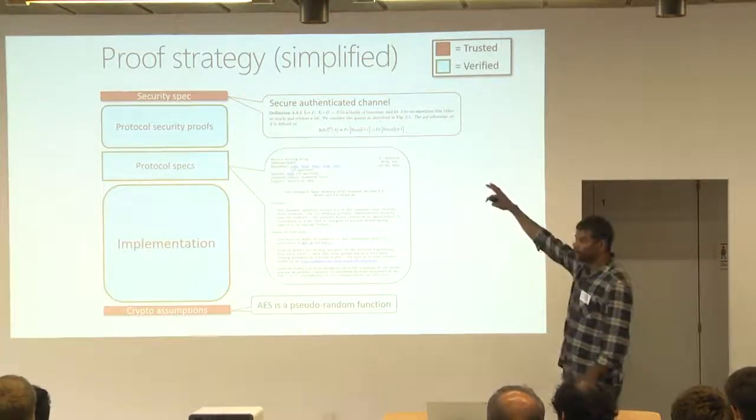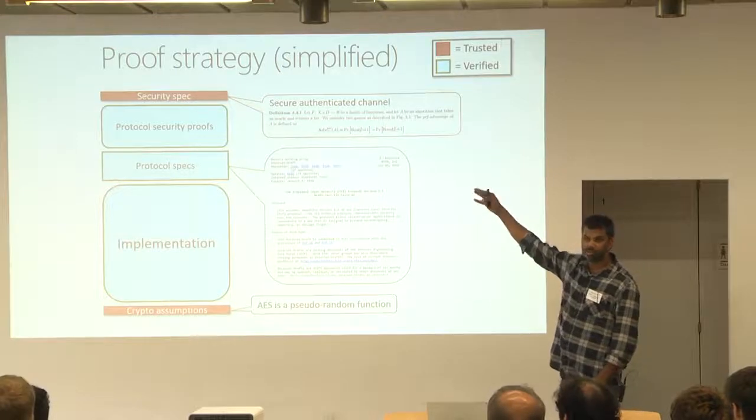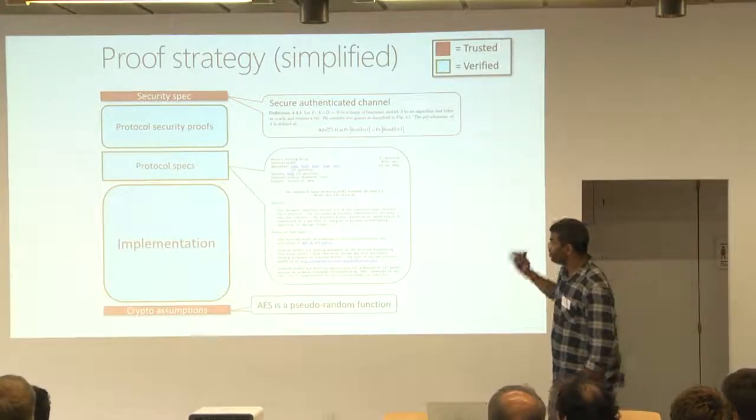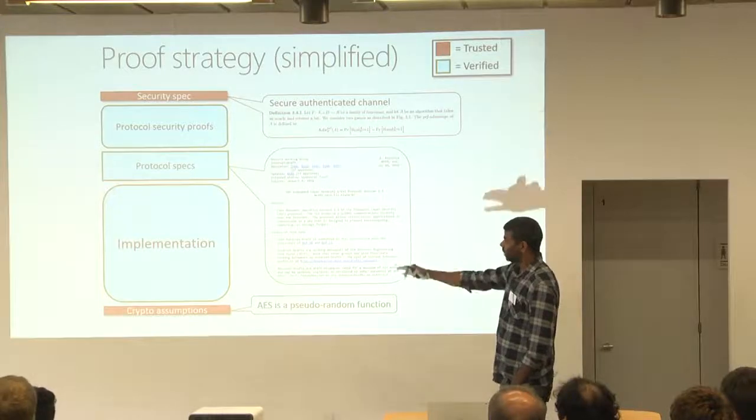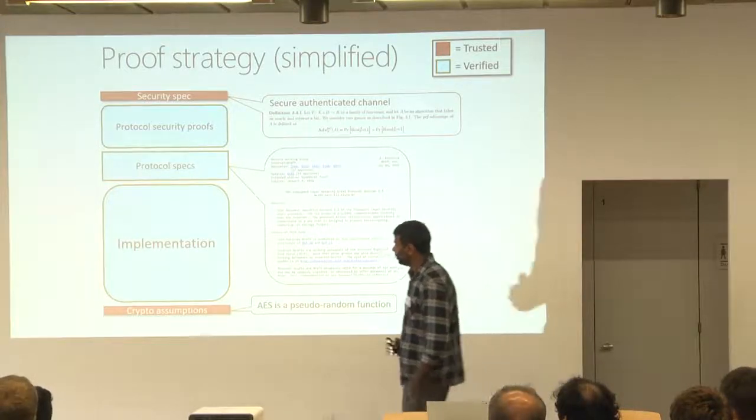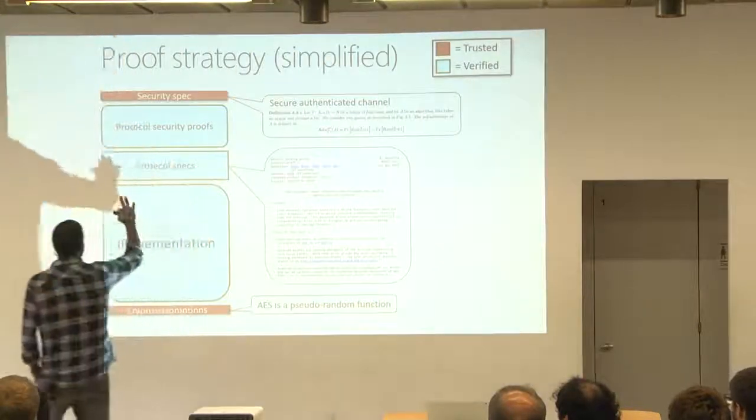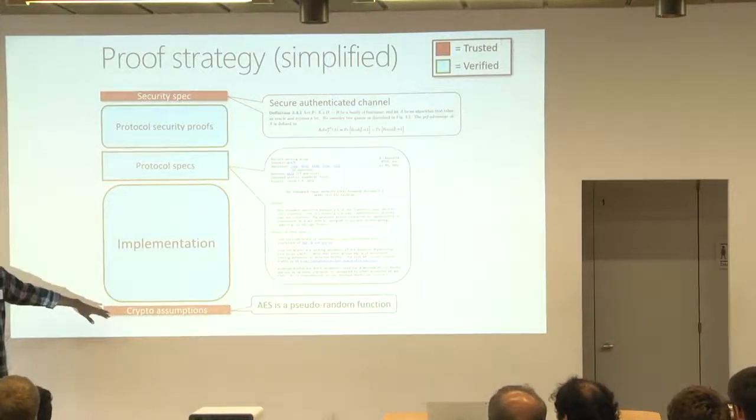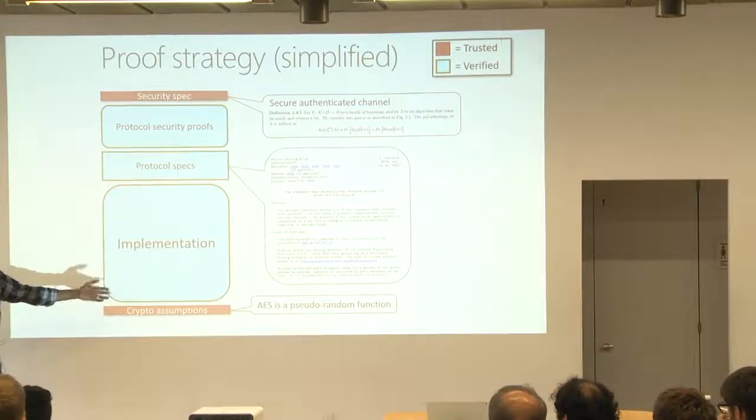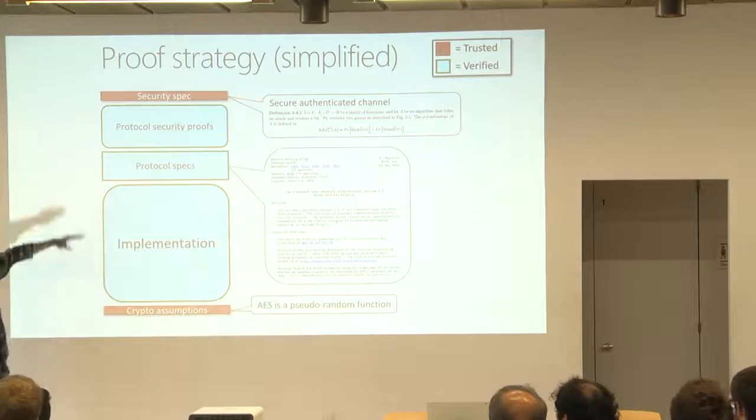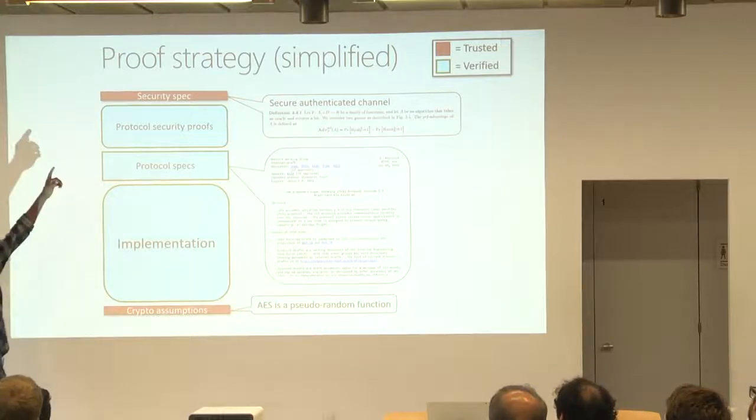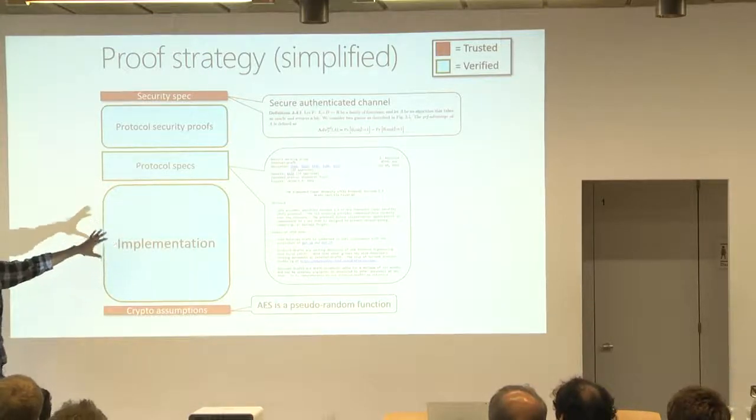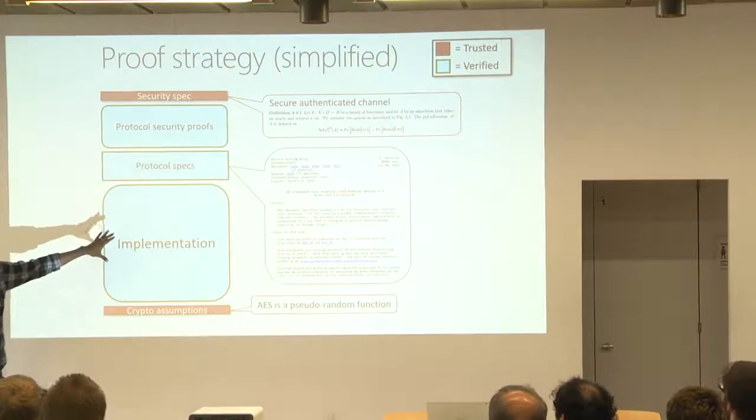You have, at the very top, a security specification of what it means for TLS to provide you with a secure channel. There's a large implementation of TLS, protocol specs, and proofs. And at the bottom, there are crypto hypotheses. For instance, that AES is a pseudo-random function. So as long as you trust our assumptions and our spec at the top, you don't have to trust this large piece of verified code in the middle.